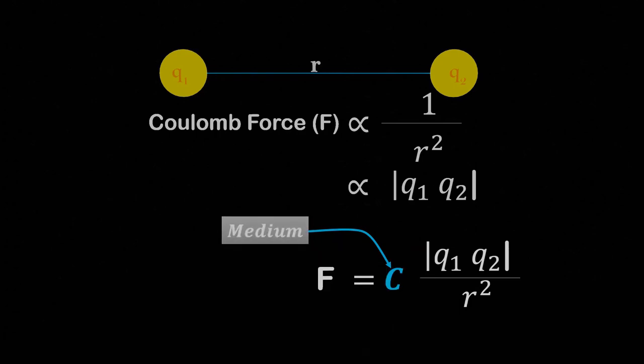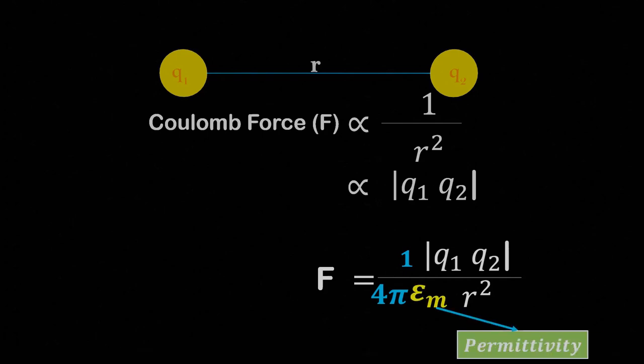This constant is equal to 1 by 4π epsilon M, where epsilon M is the permittivity of the medium between the charges.